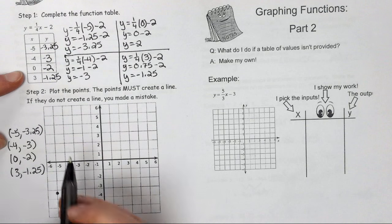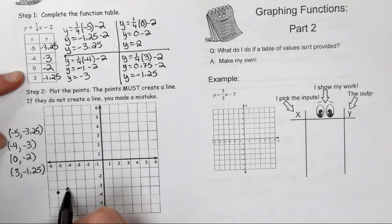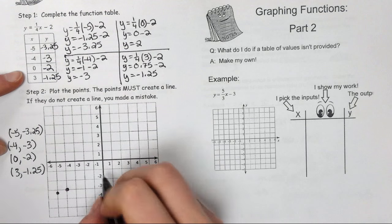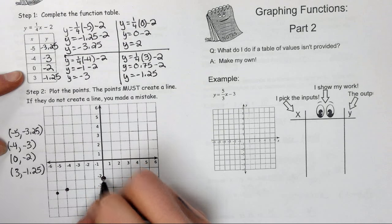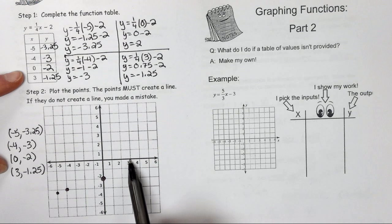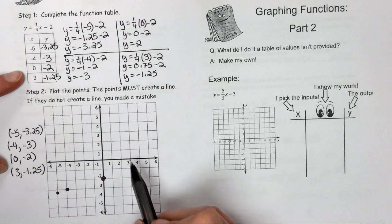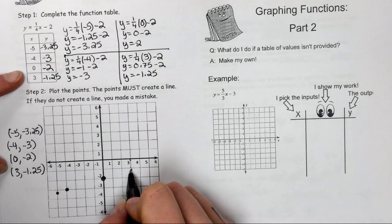The second one is negative 4 and then negative 3. I have 0, negative 2, and 3, negative 1.25. So here's negative 1 and negative 1.25 is there.